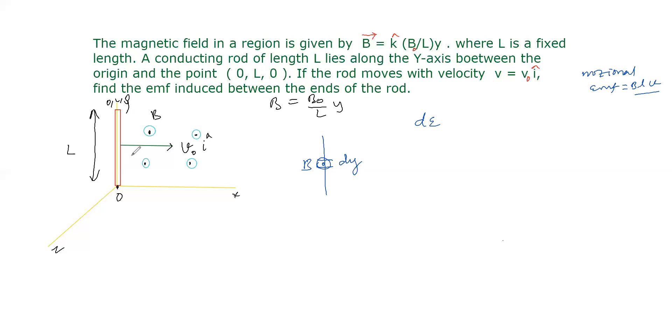Here the magnetic field is in z direction, length of the rod is in y direction, velocity is in x direction. So B, L, V, everything is mutually perpendicular, so the EMF will be maximum.